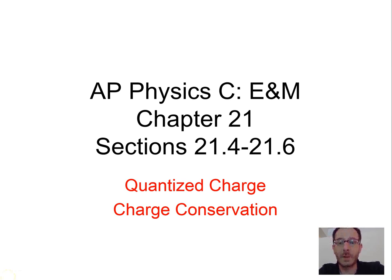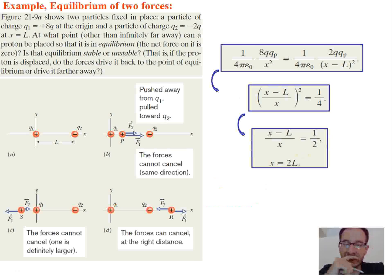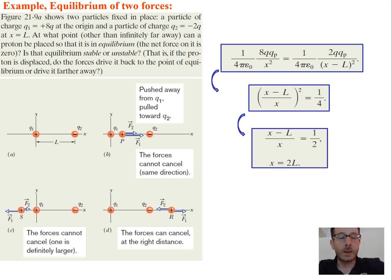We're continuing on with chapter 21. We're going to discuss quantized charge and charge conservation, but first I want to do another example problem from the last section. This figure is going to show that two particles are fixed in place: a particle of charge q₁ which is 8q at the origin, and then a charge of q₂ which is negative 2q at some x equals L. So that's what's shown right here. One charge at the origin, one charge at L.